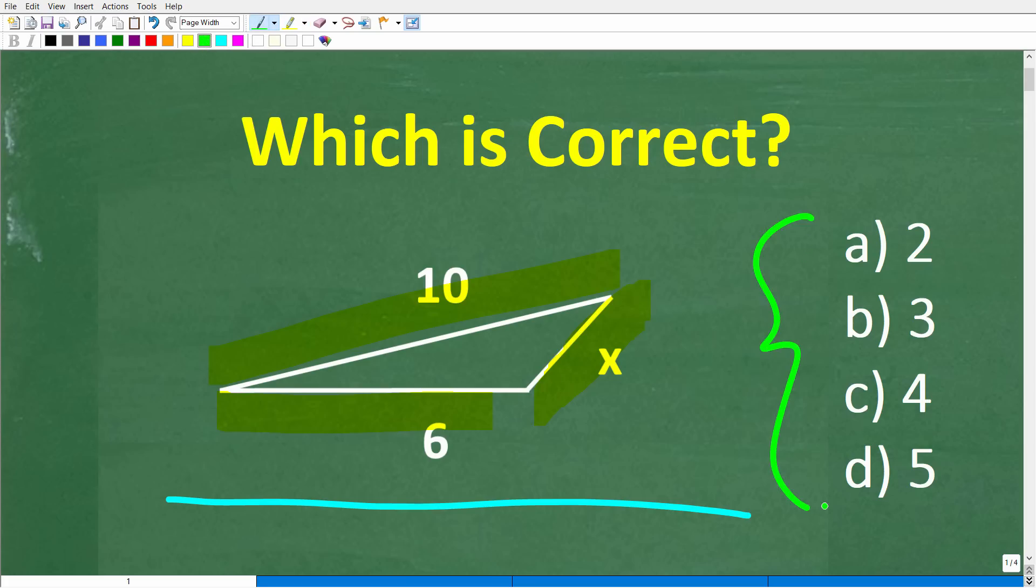All right, we do have a multiple choice question here. Let's take a look at our answers. A is 2, B is 3, C is 4, and D is 5. Feel free to use a calculator, but if you have an answer, go ahead and put that into the comment section.